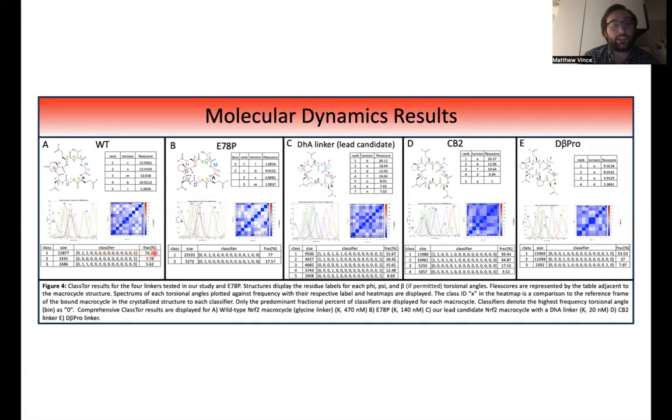So as we can see here, we get the fractional percent of all the frames of the 30,000 used that are within this pose versus another pose. So this is very important in understanding the different poses that are composed of your macrocycle using these different linkers. So, for example, here, a DHA linker, we can see many different poses that exist.